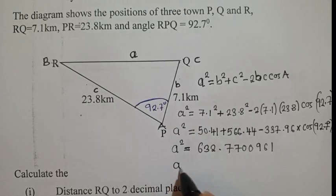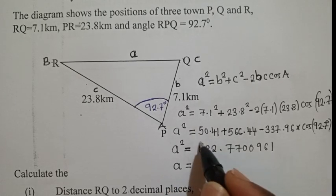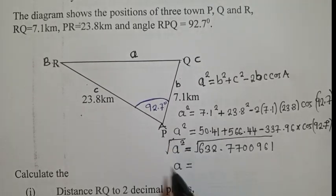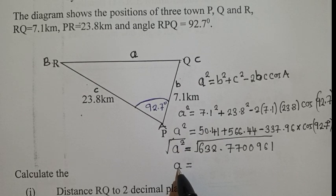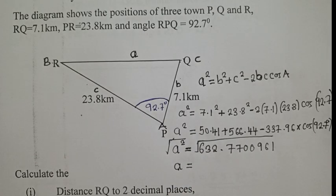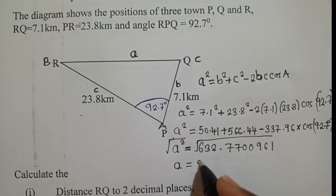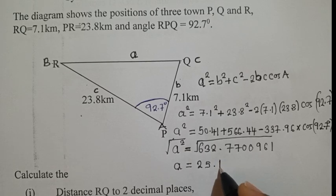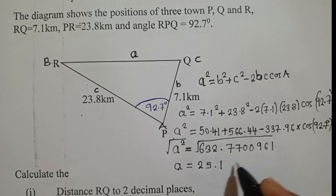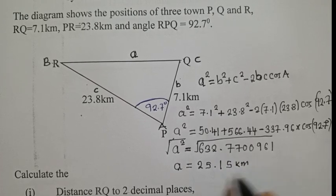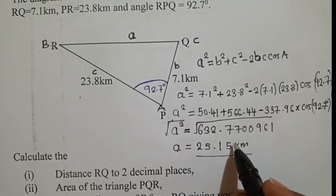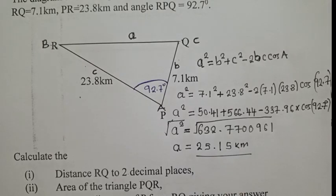So now to solve for a, you shall say a is equal to, you now find the square root right here. So this power 2 and the root will go, you remain with the a. So what is the square root now there? So when you find the square root, you are getting 25.15 kilometers. Remember, they have said we must give our answer in two decimal places. So we've got one, two. So this is our answer.